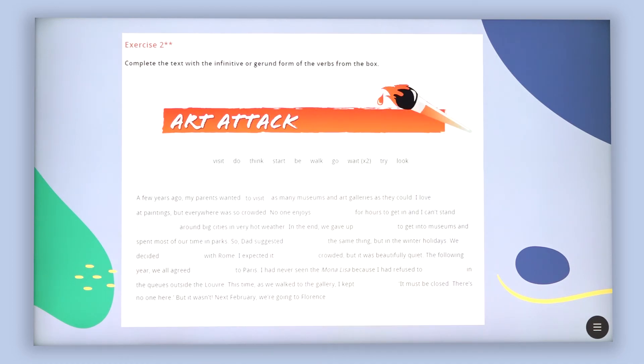Complete the text with the infinitive or gerund form of the verbs from the box. So here you've got another exercise in which it is expected to find the correct form of the verb. The text is art attack and you can see the examples given. You are going to use the verbs visit, do, think, start, be, walk, go and wait which is used twice, try and look.